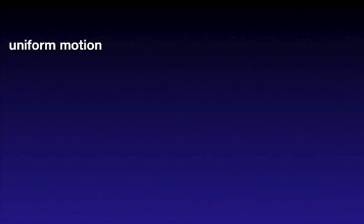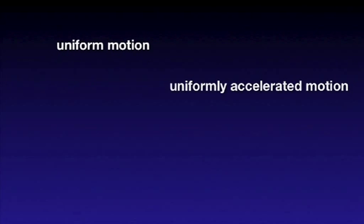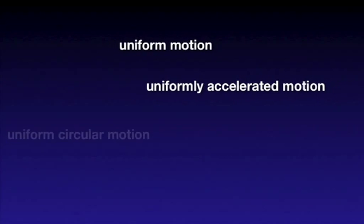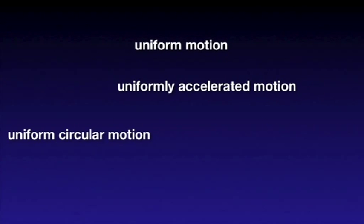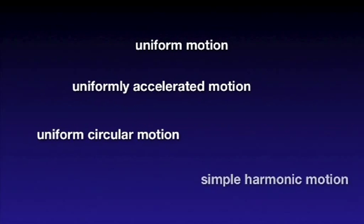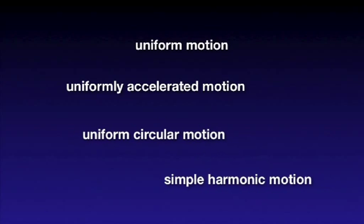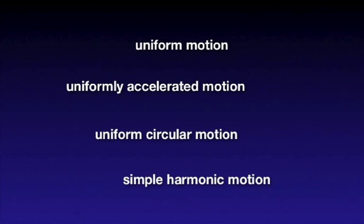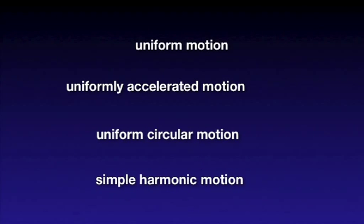The four types of motion we will cover are: uniform motion, uniformly accelerated motion, uniform circular motion, and simple harmonic motion. What is the difference between all these types of motion? Some of these names can be a little bit misleading. We'll clarify all these aspects in today's podcast.